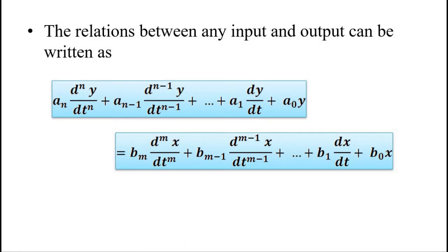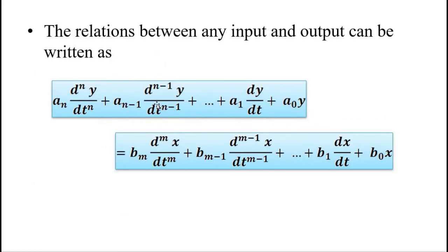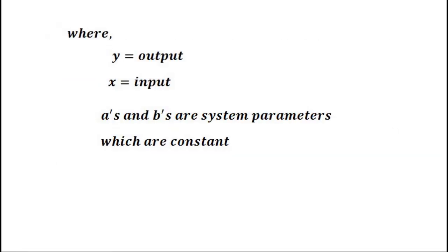When we subject the primary sensing element to test variables — step, ramp, sinusoidal — the input-output relationship is expressed as a differential equation. The order of that equation, given by the highest-order derivative present, gives us zero-order, first-order, second-order systems, and so on.